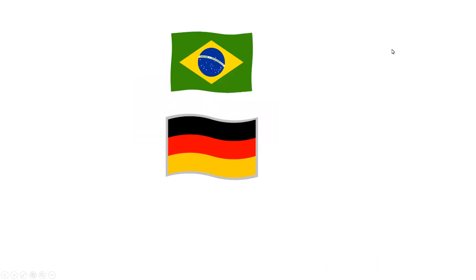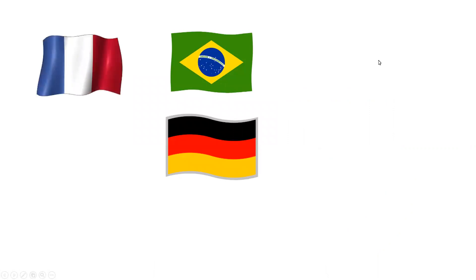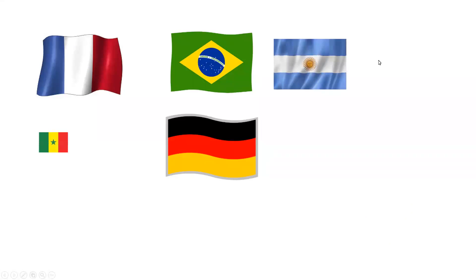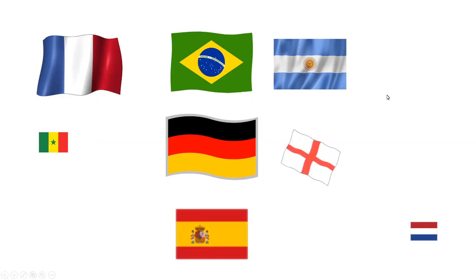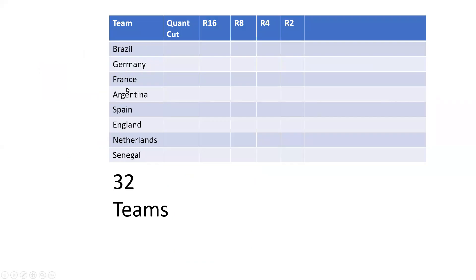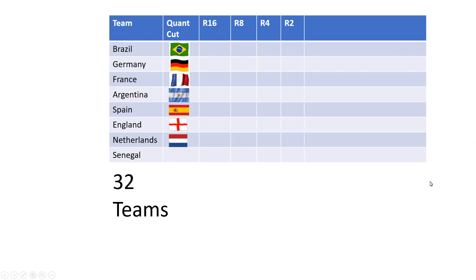So basically, if you look back at the FIFA video, you'll see that these are the teams that were selected to potentially win the 2022 FIFA World Cup. Out of 32 teams, our selection was cut down to — based just on quants — these teams: Brazil, Germany, France, Argentina, Spain, England, and Netherlands, and the outside bet was going to be Senegal.